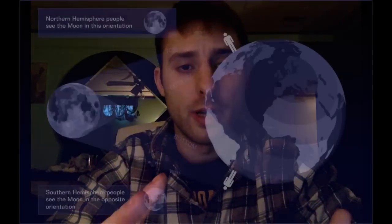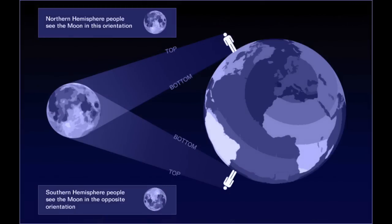The first scientific proof I want to get into is the fact that the Moon is actually inverted depending on which hemisphere of the Earth you're on. If you're in the Southern Hemisphere as compared to the Northern Hemisphere, the Moon is going to appear differently because you're looking at it from two different angles. Because the Earth is indeed a globe, this wouldn't work in a Flat Earth model. There is no way to explain this in the Flat Earth model, and this isn't something you need to consult NASA to test for yourself.